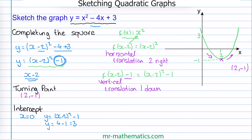And finally we're going to identify the line of symmetry. This runs parallel to the y-axis and passes through the minimum point. So in this equation it is x is equal to 2.